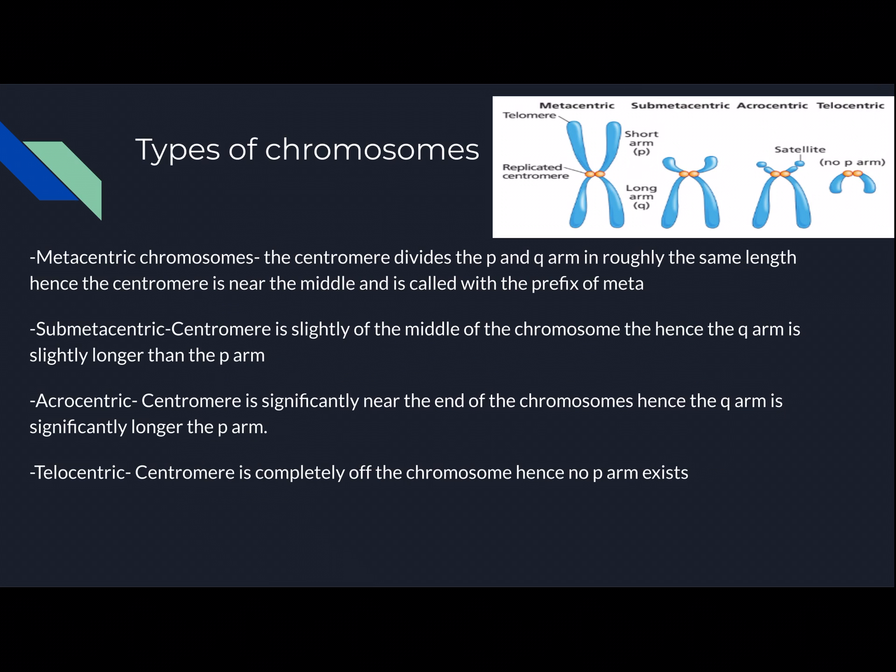Types of chromosomes you need to know. Metacentric chromosomes are when the centromere of the chromosome divides the P and Q arm by roughly the same length. The P arm is the short arm, and the Q arm is the long arm. I remember that P stands for petite, so the petite arm or the short arm. Metacentric essentially divides these into even lengths, roughly about the same length, and that's why it's called metacentric, because meta means middle — the centromere is in the middle.